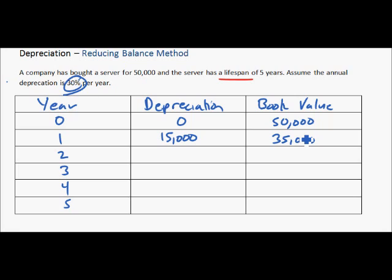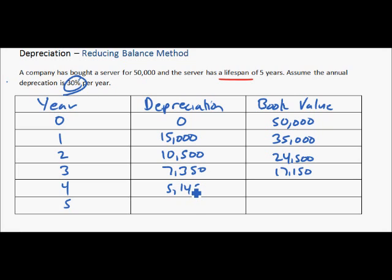Continuing the same process: 30% of $35,000 is $10,500, subtracting that gives us $24,500. Multiplying by 30% gives $7,350, leaving $17,150. Carrying on through the remaining years, we work down to a final book value of $8,404 at the end of year five.